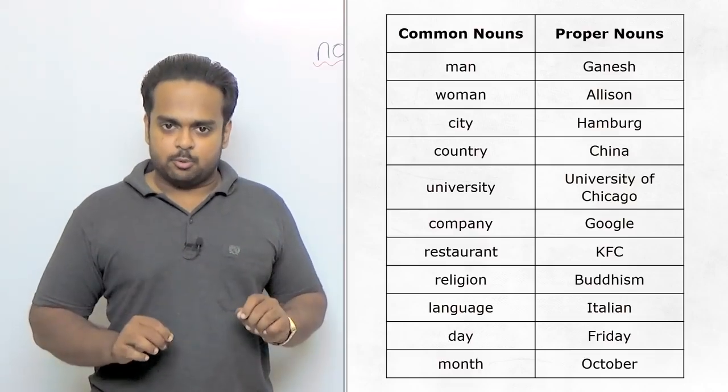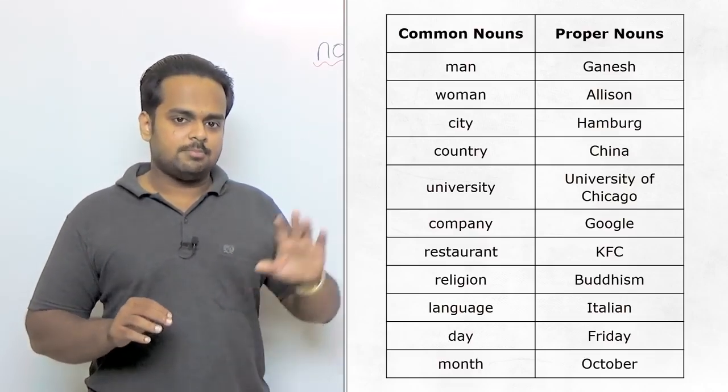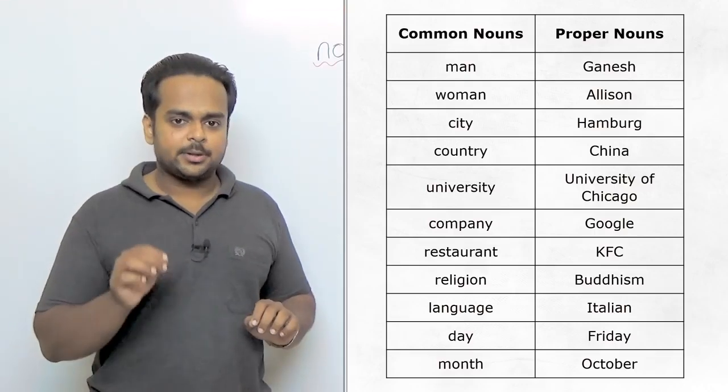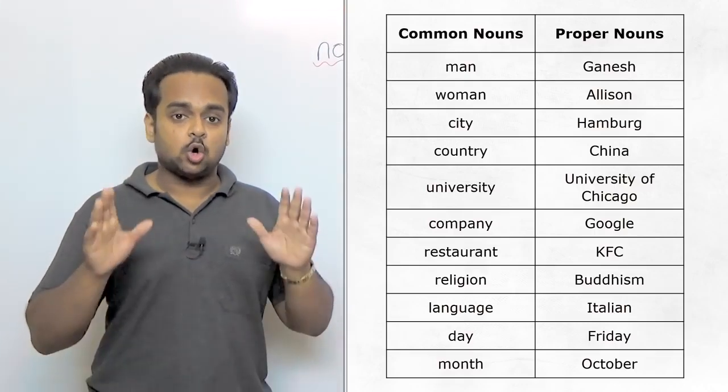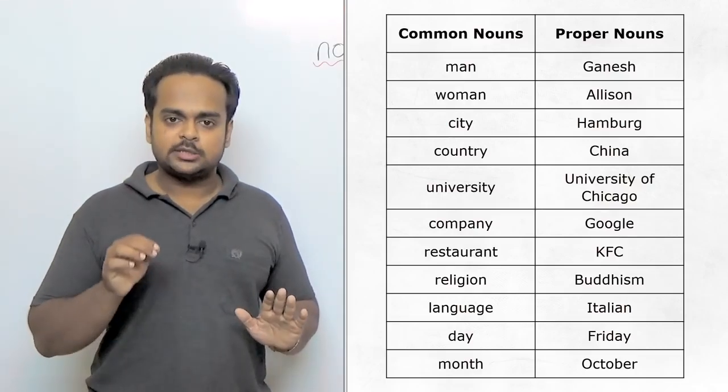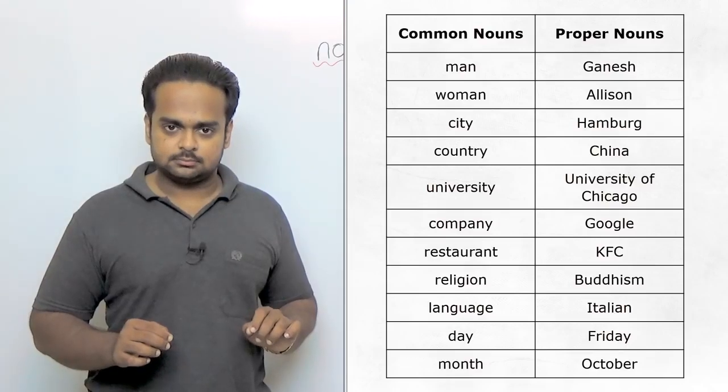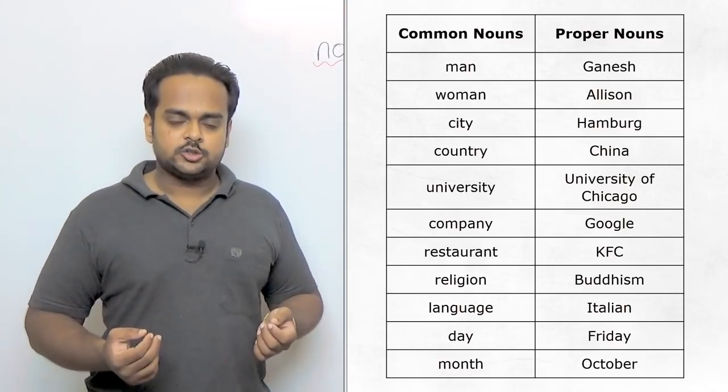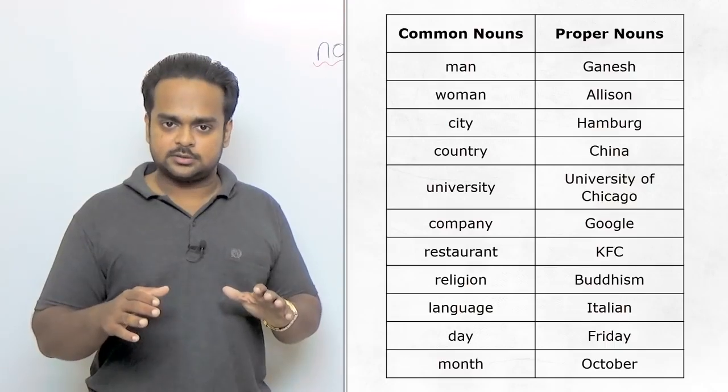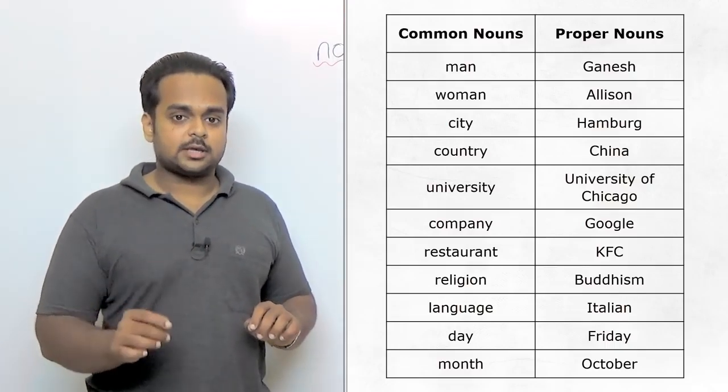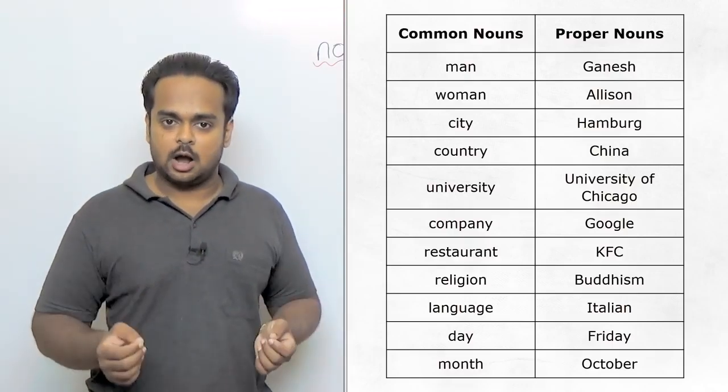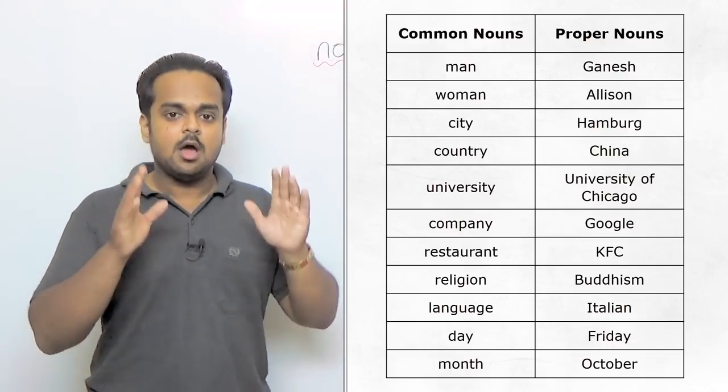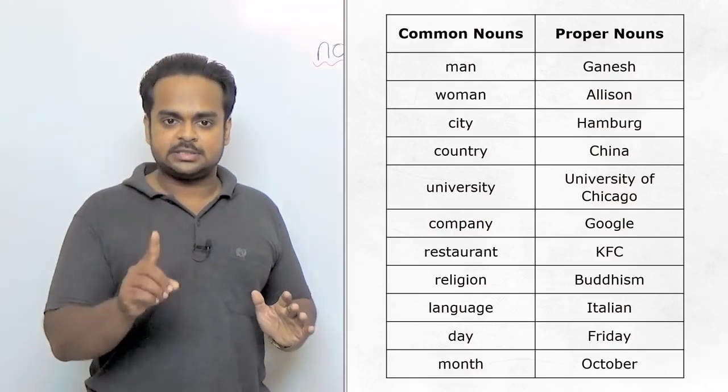Now let me ask you a question. Do you notice something about the proper nouns? You should be noticing that they're all written with a capital first letter and that is actually a rule in English. Proper nouns are always written with a capital first letter. In university for example, when we talk about universities in general, we use it as a common noun so the whole word is written in lower case. But when we're talking about a specific university, like the University of Chicago, notice that both the U in university and the C in Chicago are capitals. That's because it's a proper noun.